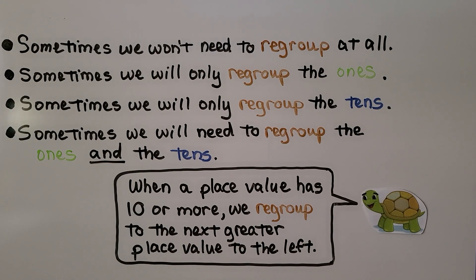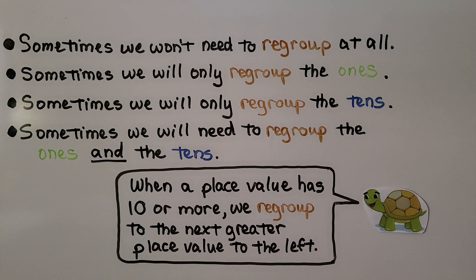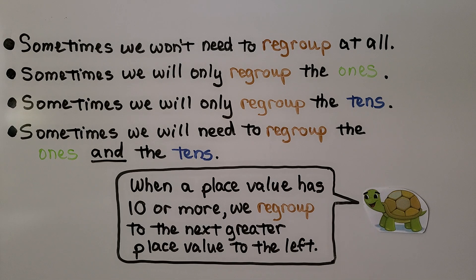Sometimes we won't need to regroup at all. Sometimes we will only regroup the ones. Sometimes we will only regroup the tens. And sometimes we will need to regroup the ones and the tens. When a place value has ten or more, we regroup to the next greater place value to the left.